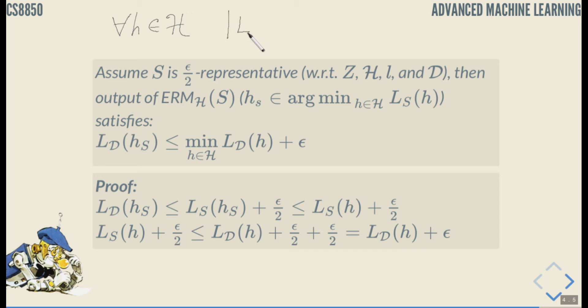The difference of empirical loss and true loss is less than or equal to epsilon. Since we're talking about epsilon over 2, let's just write epsilon over 2. So because of that this first inequality holds. Just a little detail.